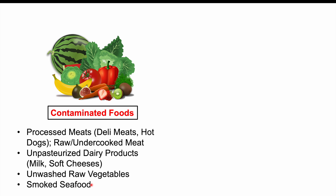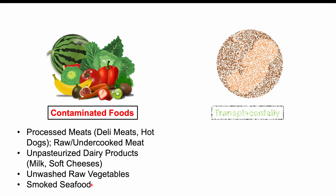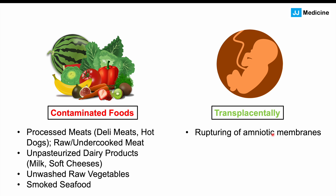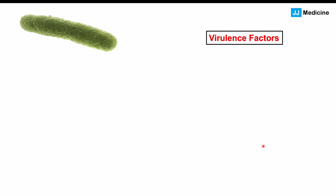Consumption of contaminated food is not the only route of infection. Humans can also be infected transplacentally — across the placenta — so the fetus can be infected during pregnancy. The newborn or neonate can also be infected through rupturing of amniotic membranes and during vaginal delivery.